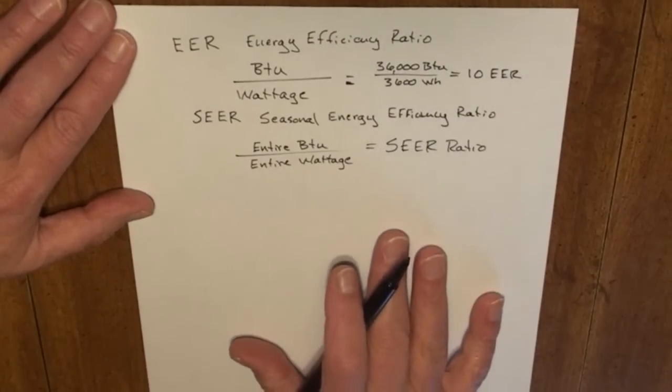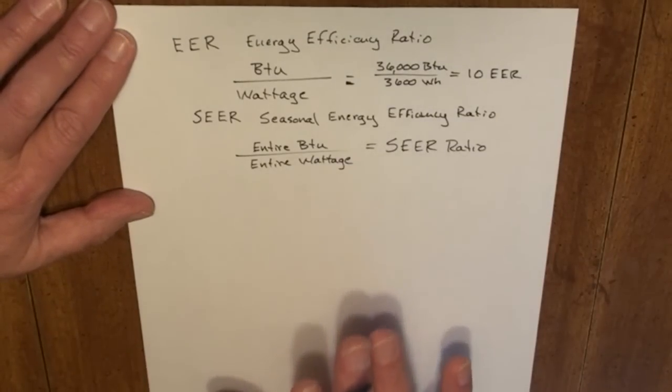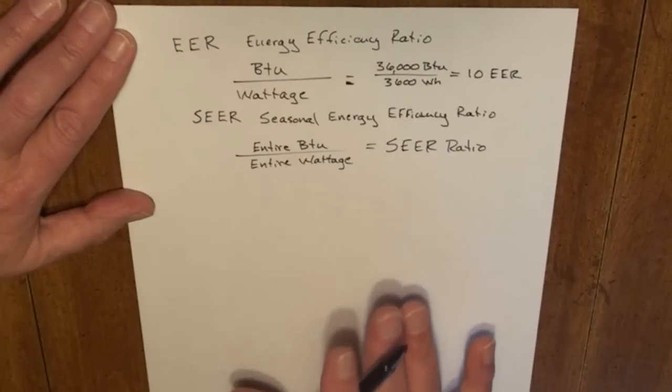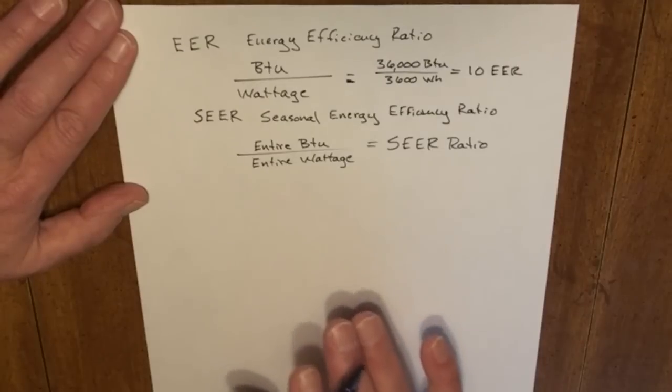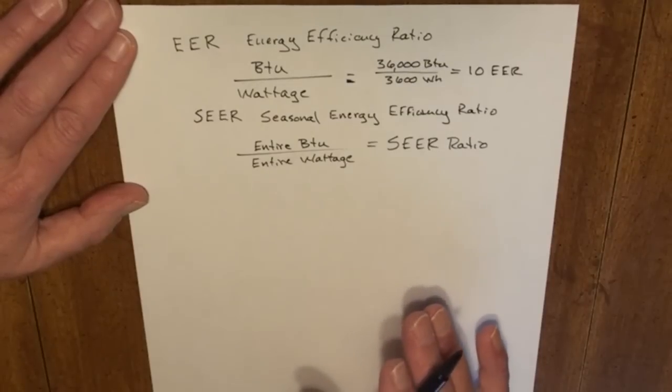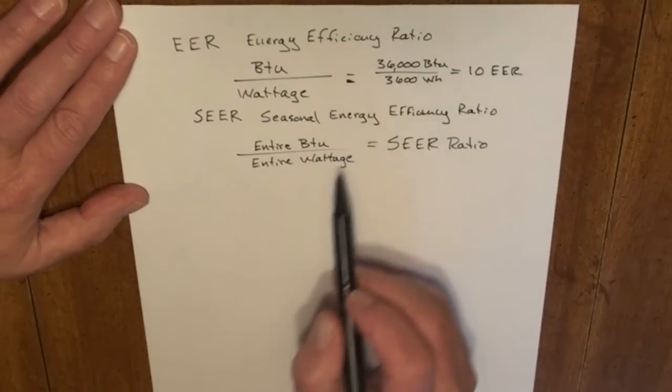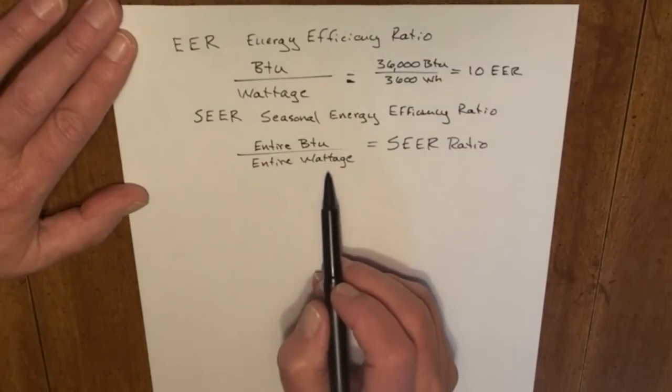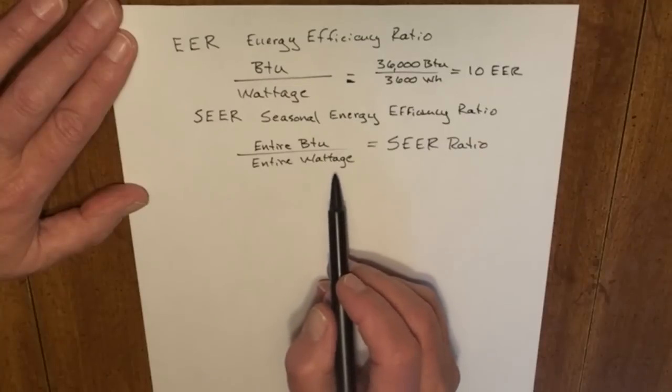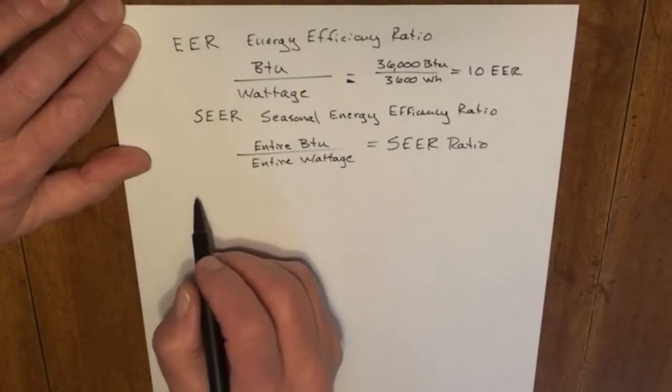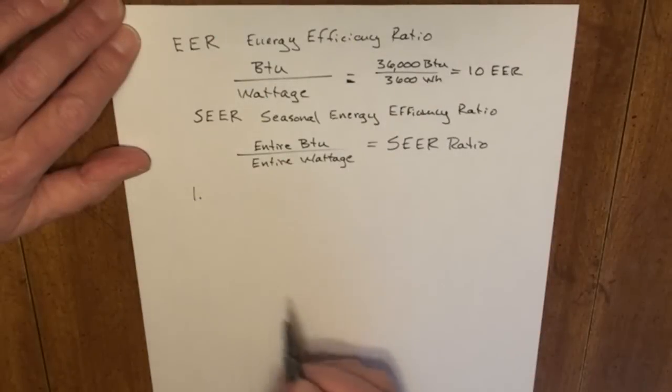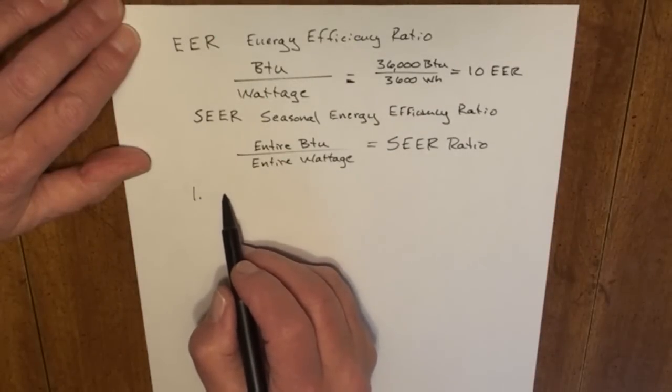These higher efficiency ratings can be accomplished by adding more energy efficient features to our air conditioning system. Different manufacturers have different combinations of these improvements to achieve lower wattage consumptions. It's all about reducing the wattage consumption. Probably the first would be an oversized condenser.